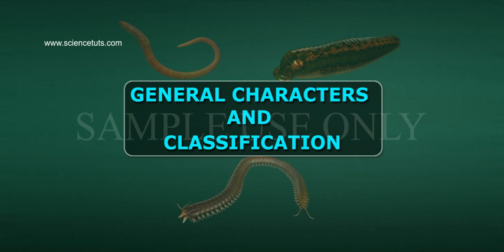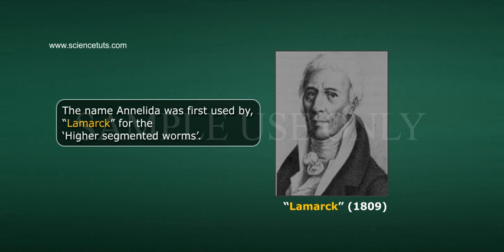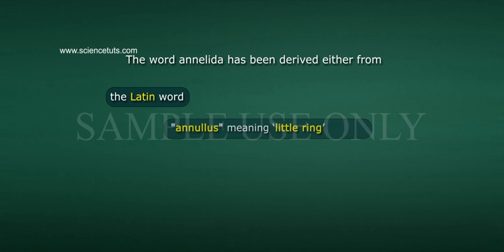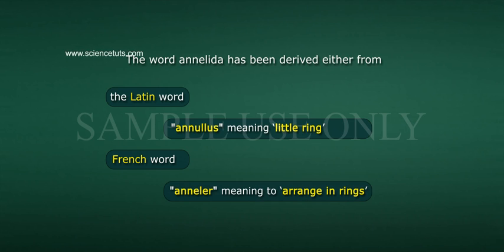Annelida: General Characters and Classification. The name Annelida was first used by Lamarck in 1809 for the higher segmented worms. The word Annelida has been derived either from the Latin word 'annulus', meaning little ring, or the French word 'anneler', meaning to arrange in rings.